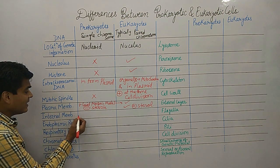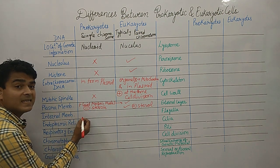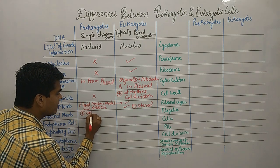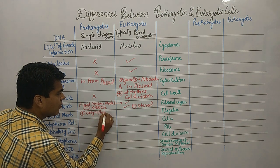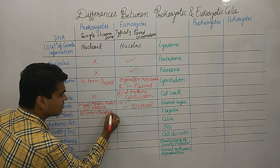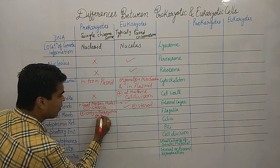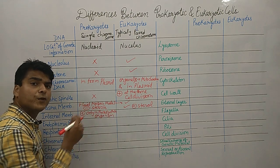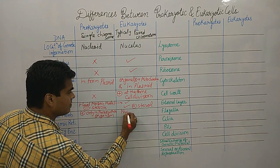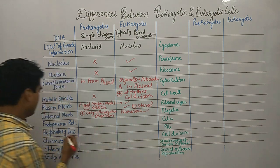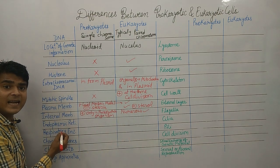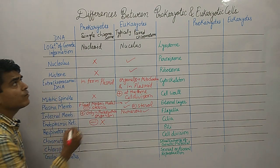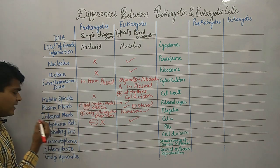Regarding internal membranes: in prokaryotes they are present only in photosynthetic organisms, whereas in eukaryotes there are numerous internal membranes. Prokaryote cells do not contain endoplasmic reticulum, while eukaryotic cells do contain endoplasmic reticulum.